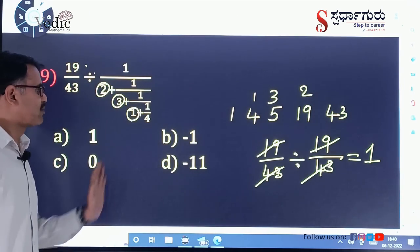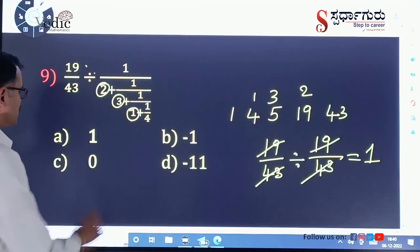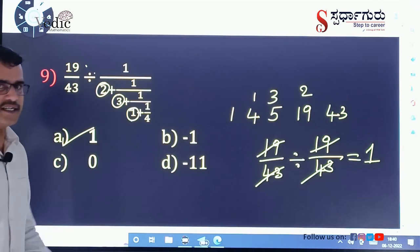See, here we have minus 1, minus 11, and 0 as options. Positive 1 is the right answer.